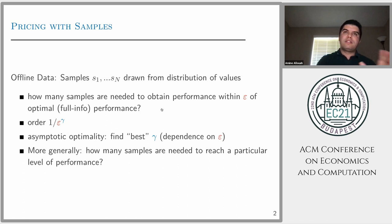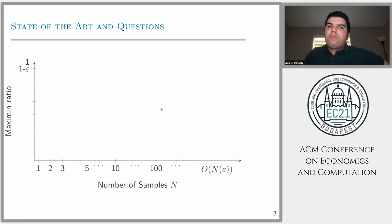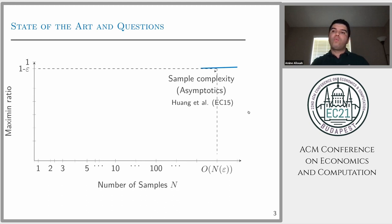This is where this work stands. More generally, I will try to give a picture of the existing literature and where our work fits. Here, in the x-axis, we have the number of samples that the seller has access to but does not know the exact distribution. The y-axis represents the performance compared to the optimal, the oracle performance had the seller known the exact distribution.